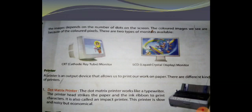Next is the printer. A printer is an output device that allows us to print our work on paper. There are different kinds of printers. The dot matrix printer works like a typewriter — the printer head strikes the paper through an ink ribbon to print characters. It is called an impact printer. This printer is slow and noisy but economical.